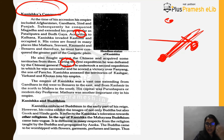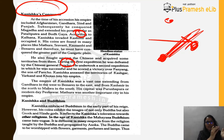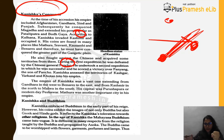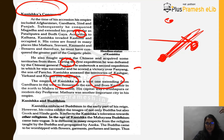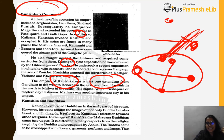Kanishka was a ruler focused on expanding his empire, extending it from territories inherited from his predecessors to new conquests. His empire stretched from Gandhara in the west to Banaras in the east, and from Kashmir in the north to Malwa in the south. His capital was Purushapura (modern Peshawar, Pakistan), with Mathura serving as an important alternate cultural capital.